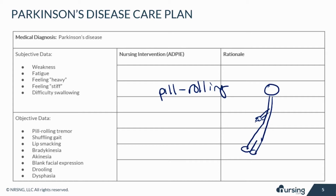It takes a long time to get them from point A to point B. They have really slowed movements, or bradykinesia. They might have some lip smacking, drooling, and kind of a blank face — almost a flat affect. These symptoms are all due to the loss of muscle control and they worsen as the disease progresses.